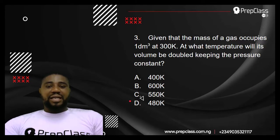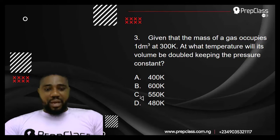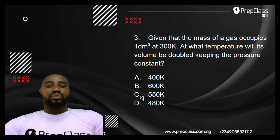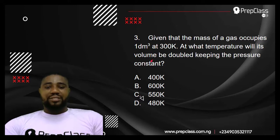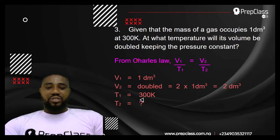Question number 3: Given that a mass of gas occupies one dm³ at 300 Kelvin, at what temperature will its volume be doubled, keeping the pressure constant? From the gas laws, when pressure is constant, the volume of a given mass of gas is proportional to its temperature — this is Charles's Law. From Charles's Law: V₁/T₁ = V₂/T₂.